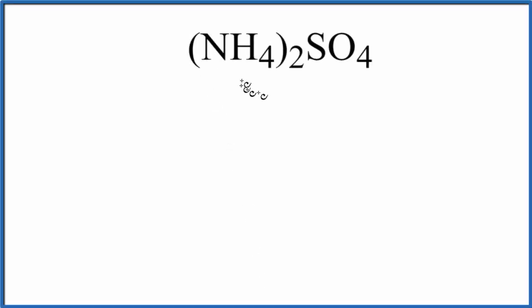To find the number of atoms in NH42SO4, that's ammonium sulfate. Let's first write the element symbols.